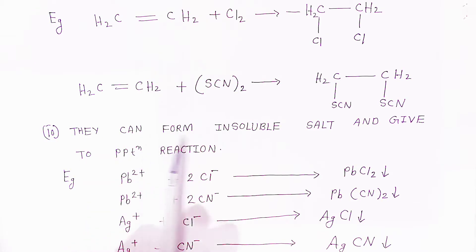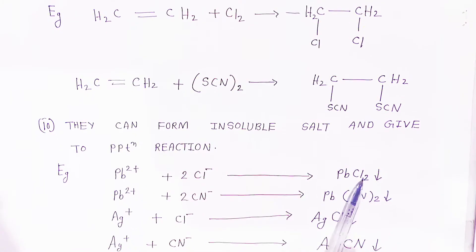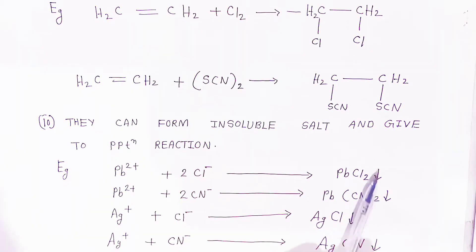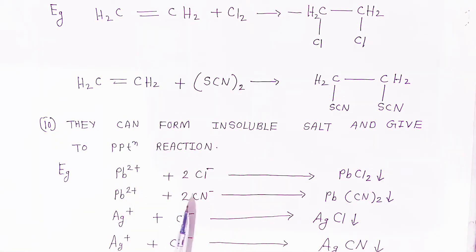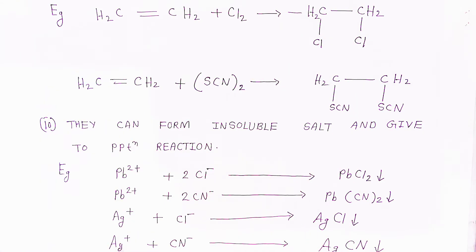They can form insoluble salts and give precipitation reactions. For example, when combined with chloride, Pb²⁺ gives lead chloride as a precipitate. Similarly, Pb²⁺ combined with cyanide gives lead cyanide as a precipitate. Silver combined with chloride ions forms silver chloride; silver combined with cyanide forms silver cyanide. So lead cyanide and silver cyanide are examples of pseudo halogens.